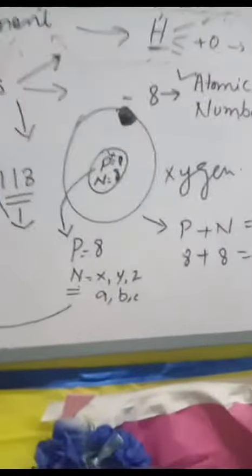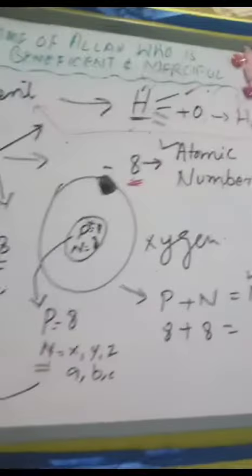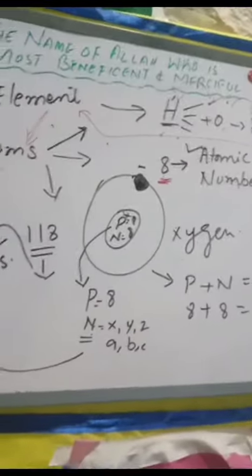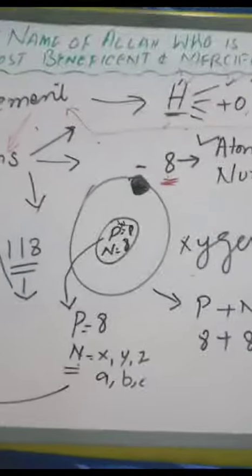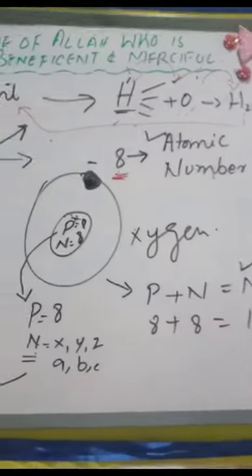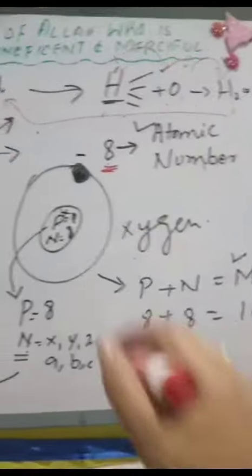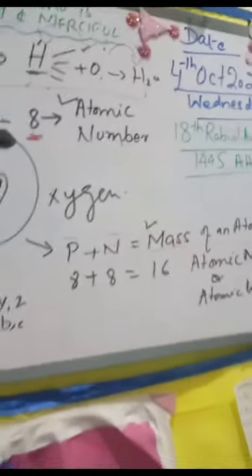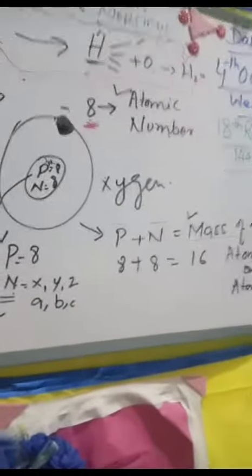We discussed today the atomic number and mass number. Atomic number is according to the number in the periodic table - that's why its atomic number is 8. But mass number is the combination of protons and neutrons, and this gives us the mass number of the atom.